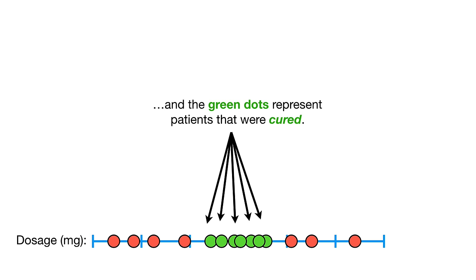The main ideas behind support vector machines are: 1. Start with data in a relatively low dimension — in this example, the data started in one dimension. 2. Move the data into a higher dimension — here we moved from one dimension to two dimensions. 3. Find a support vector classifier that separates the higher dimensional data into two groups. That's all there is to it.